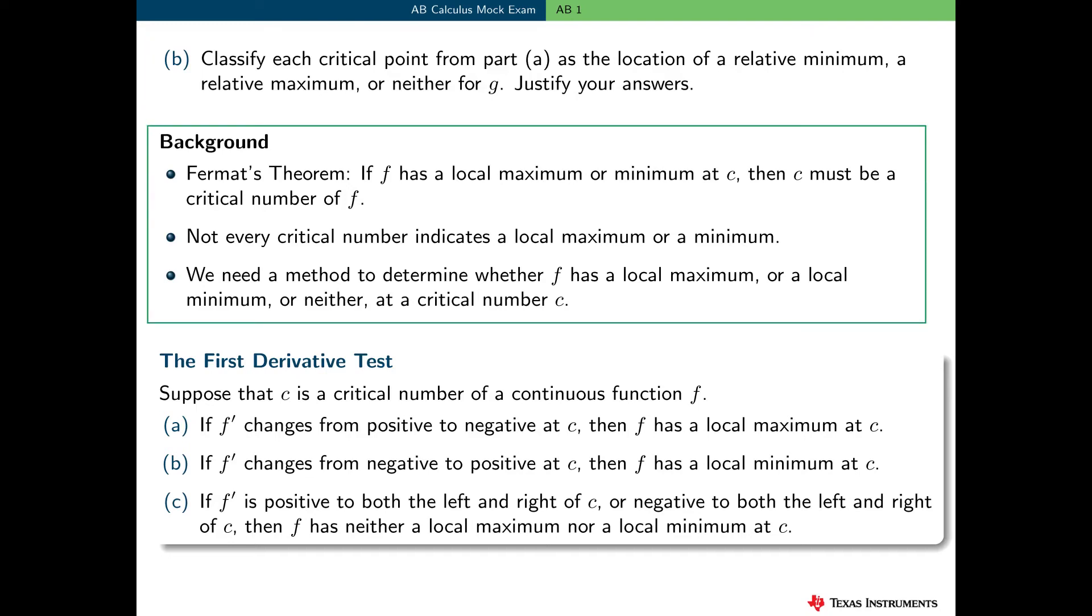Now, here's a little background necessary to answer this question. You'll recall that Fermat's theorem says that if a function f has a local maximum or minimum at c, then c must be a critical number of f. But remember, the converse of this theorem is not true. That is, not every critical number is the location of a local maximum or a local minimum.